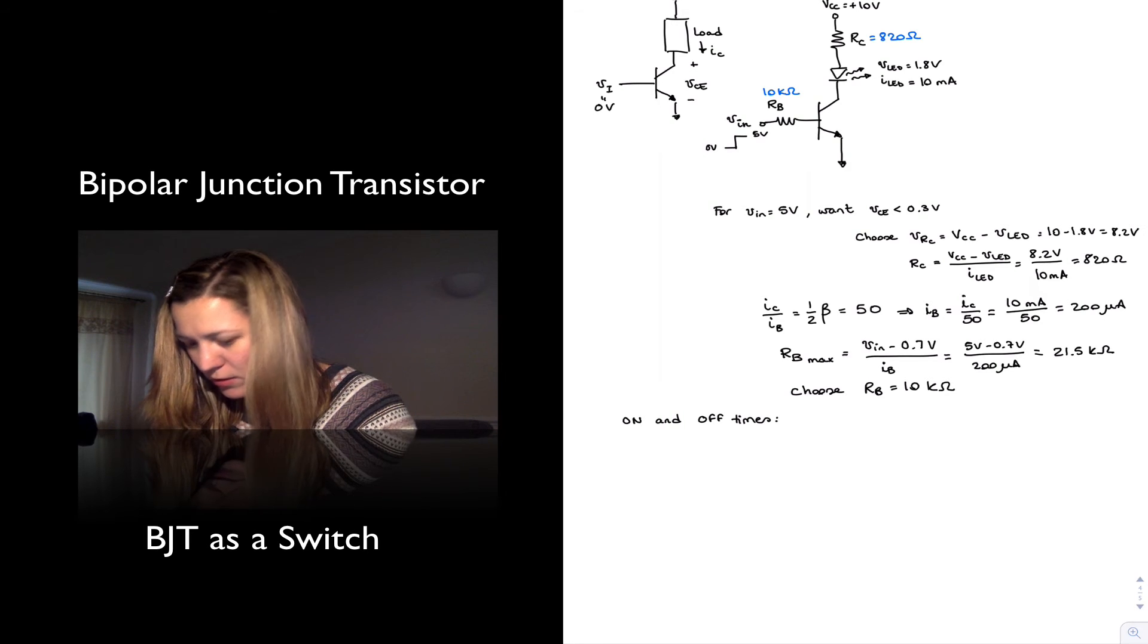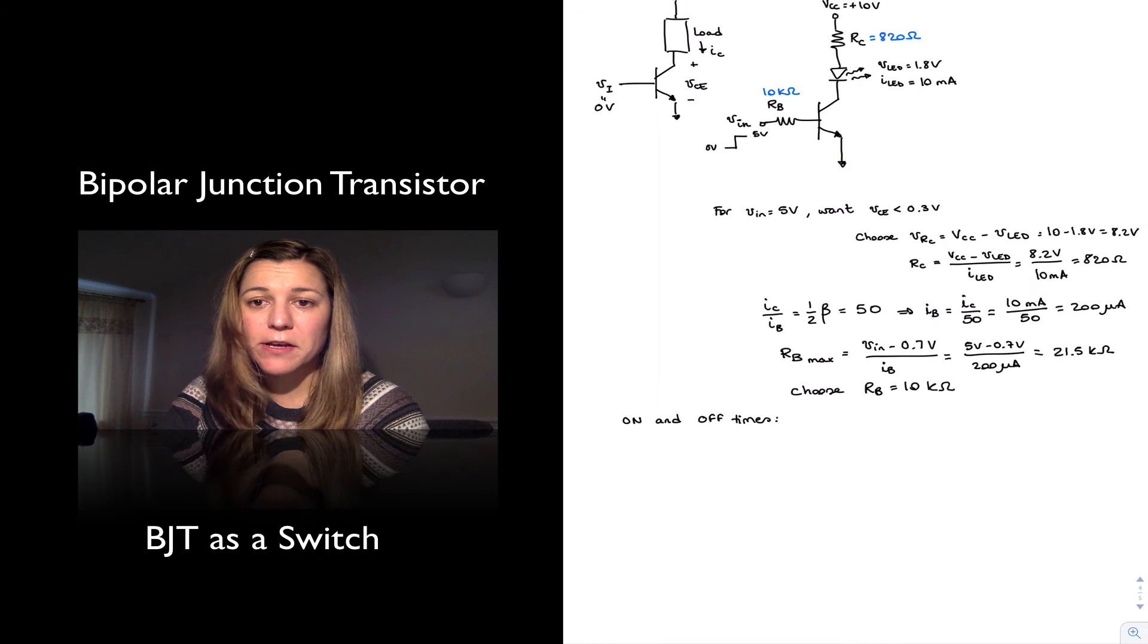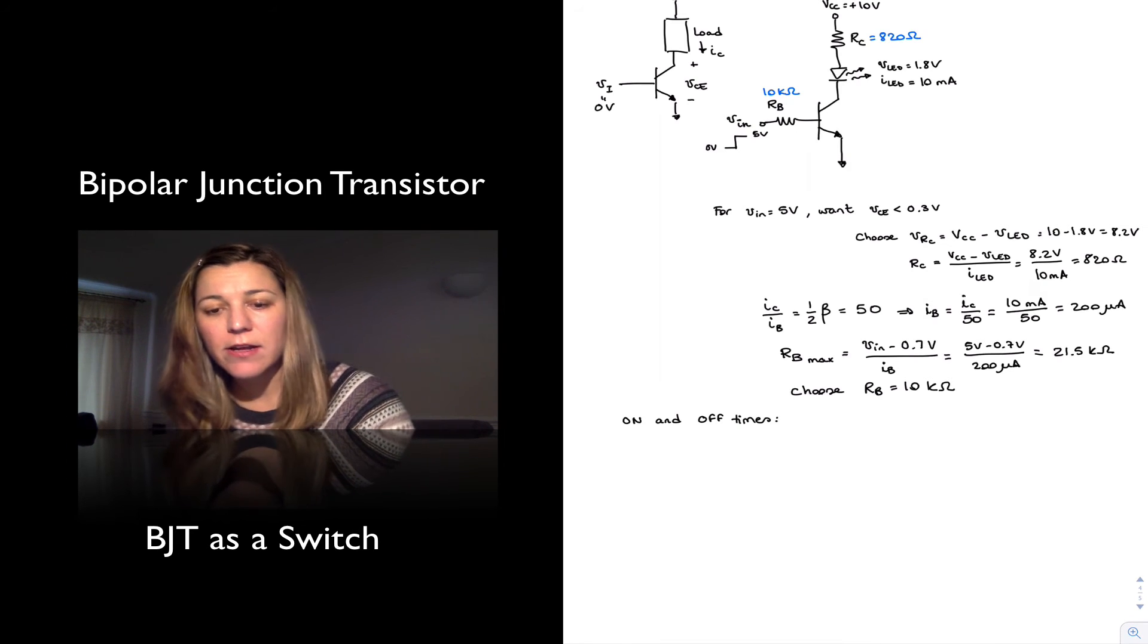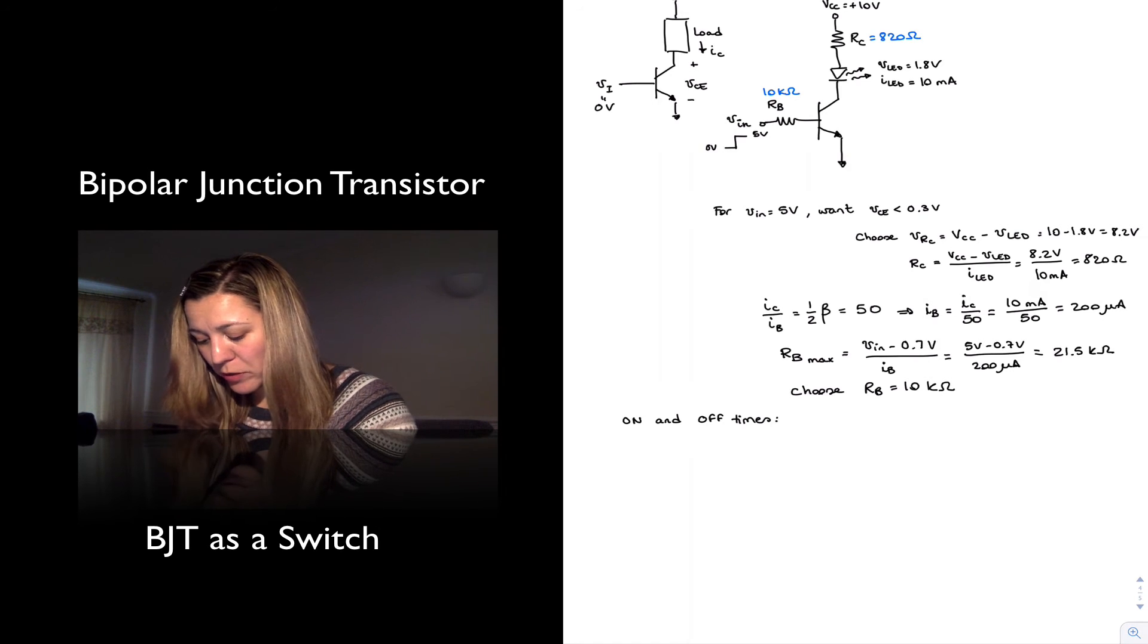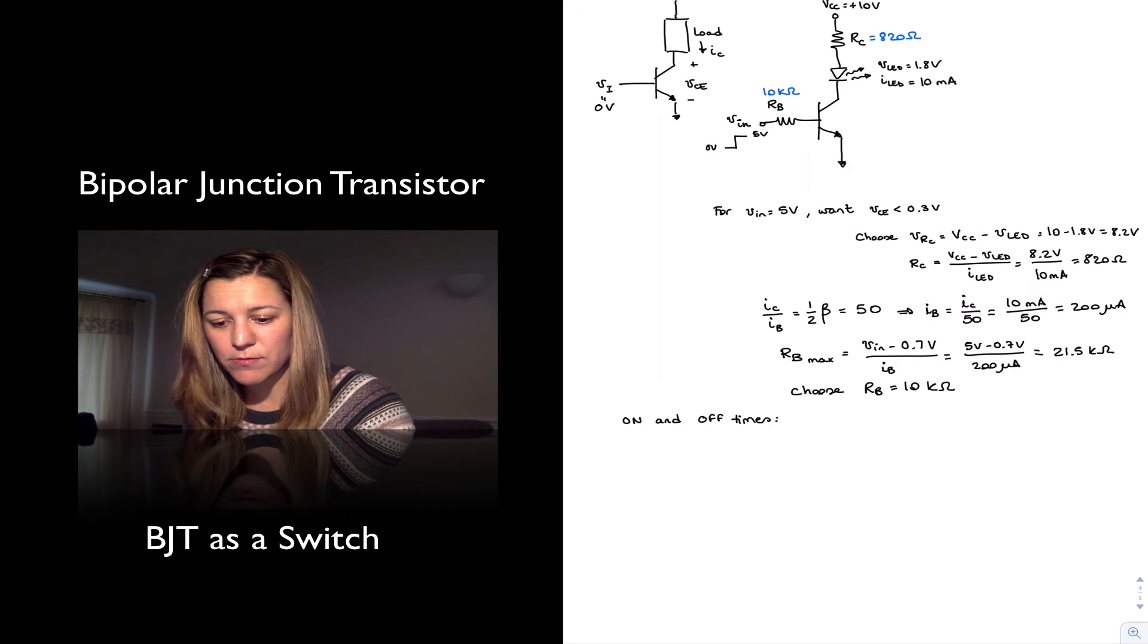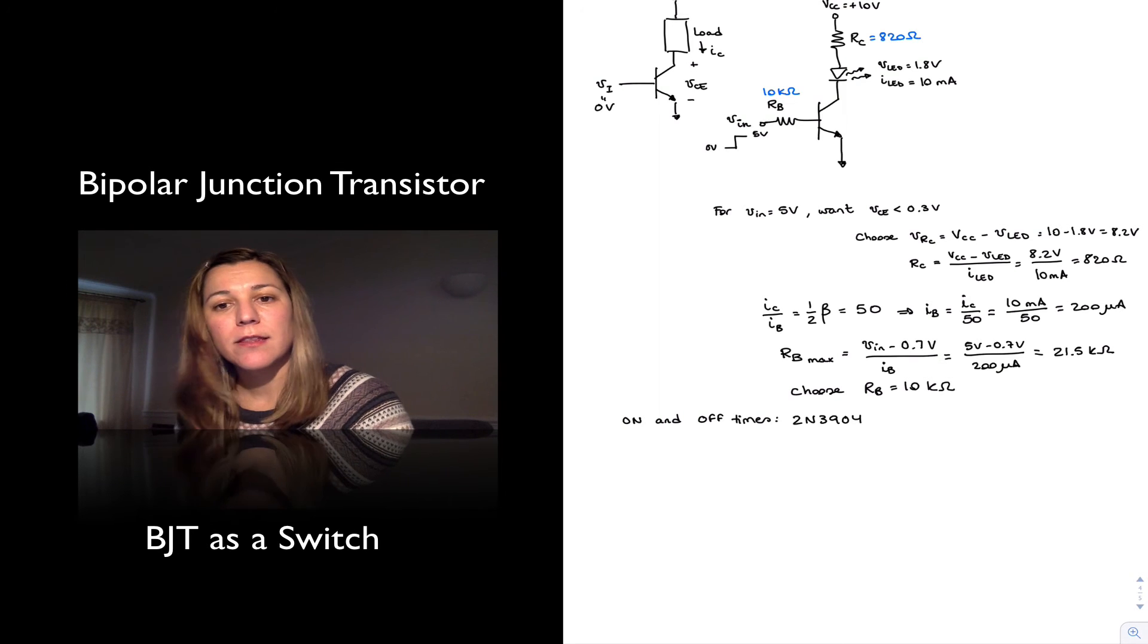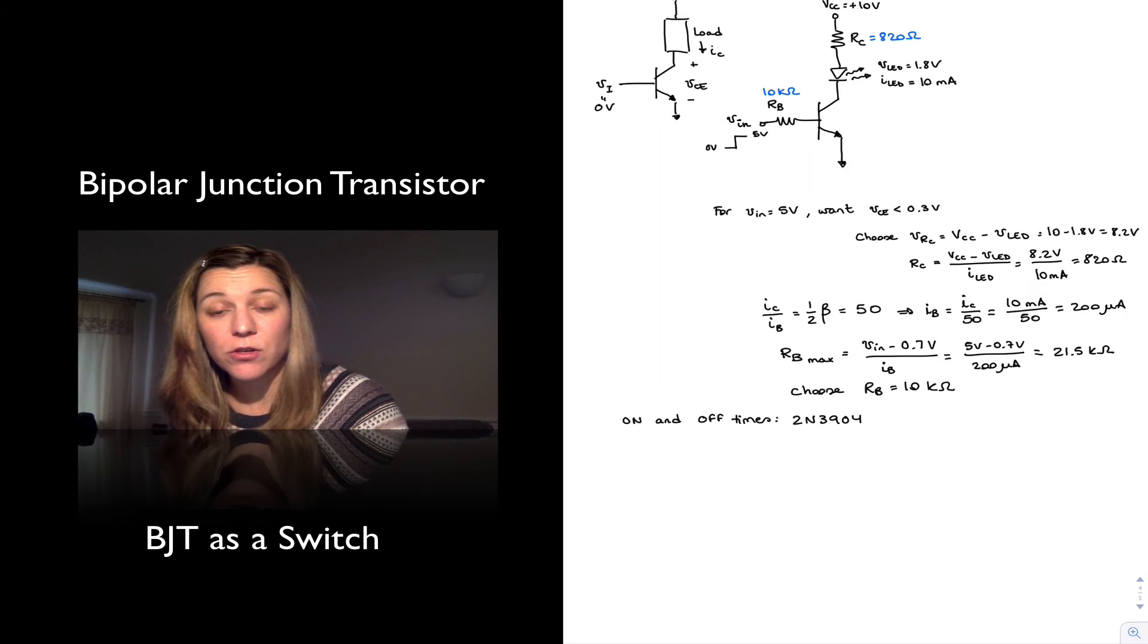In order to calculate those, we are going to need to use the values for rise time, fall time, delay time, etc. that come out of the data sheet. And so for the sake of example, we are going to pick a generic small signal general purpose transistor, which is the 2N3904. And you have the data sheet for the transistor on the course website.